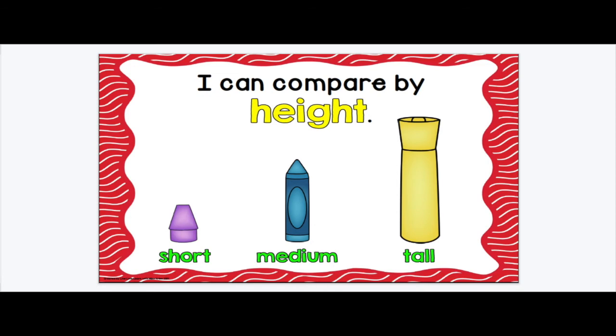I can compare by height and line them up by how tall they are. Short, medium, tall. And do you see how it goes in a straight line like this? Almost makes it look like a ramp from the shortest to the tallest.